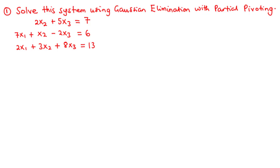In the previous lesson, we looked at how to solve a system of n linear equations with n unknowns using the naive Gaussian elimination method. Now in this lesson, we are going to discuss the pitfalls or problems with naive Gaussian elimination and how to address these problems by employing a more improved technique.